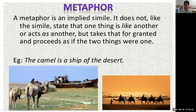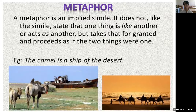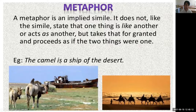Metaphor. A metaphor is an implied simile. Unlike simile, it states that one thing is another, or acts as another, but takes it for granted and proceeds as if the two things were one. For example: 'The camel is the ship of the desert.' Here this sentence is a good example of metaphor. Or if you say 'the camel is like the ship of the desert,' then it becomes a simile.